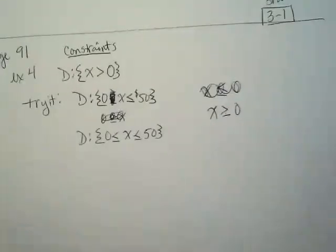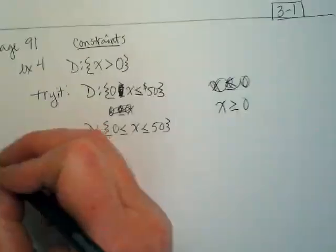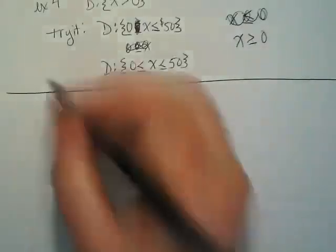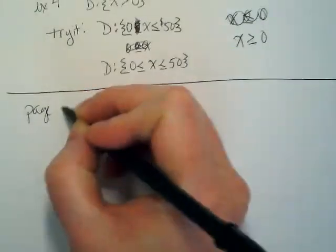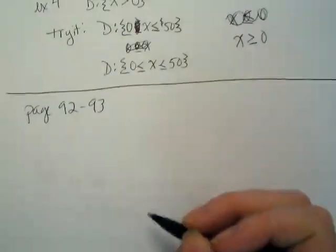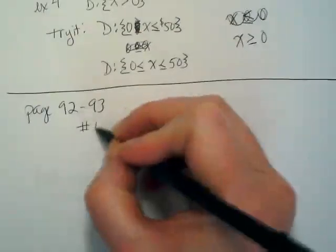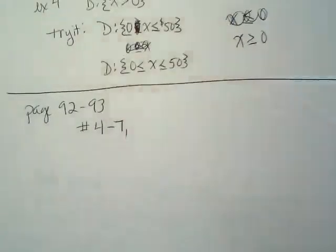So with that, here are the problems that I want you guys to do. They are going to be due whenever I see you next, after when the snowmageddon is over. Bless you. Please turn the page to page 92-93. We are starting at number 4 and going through number 7.